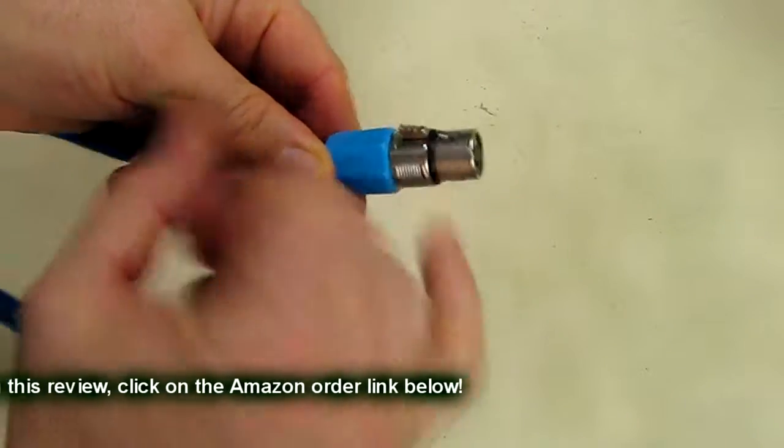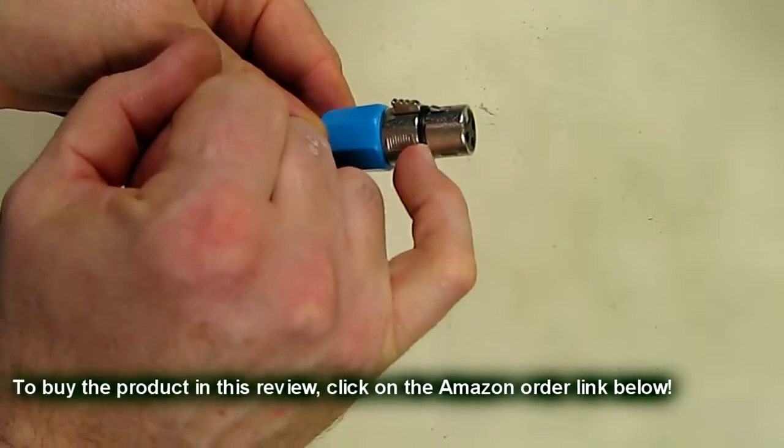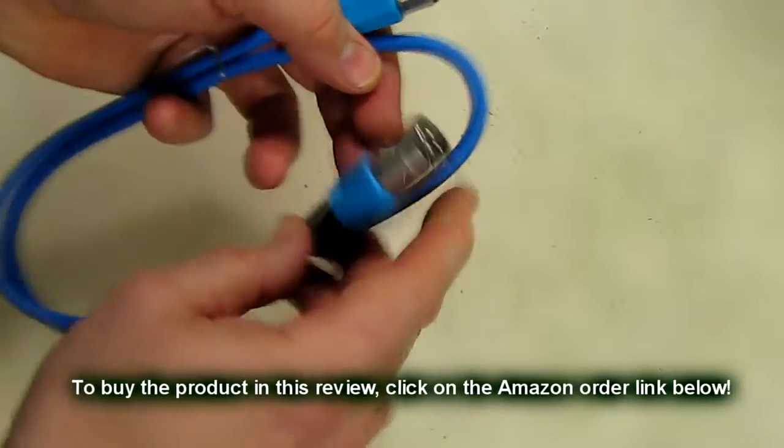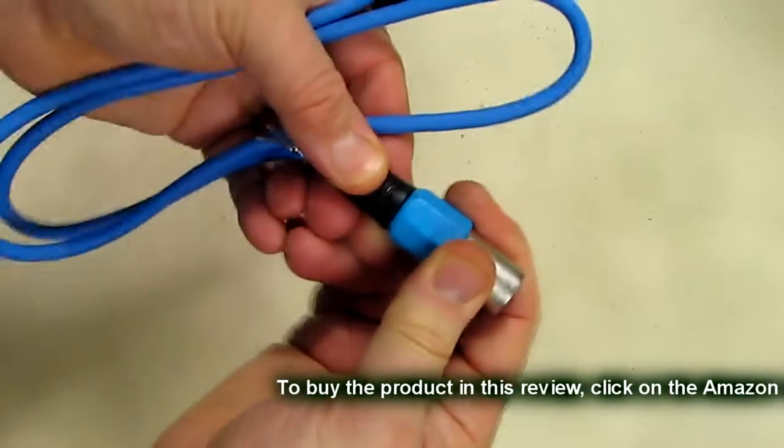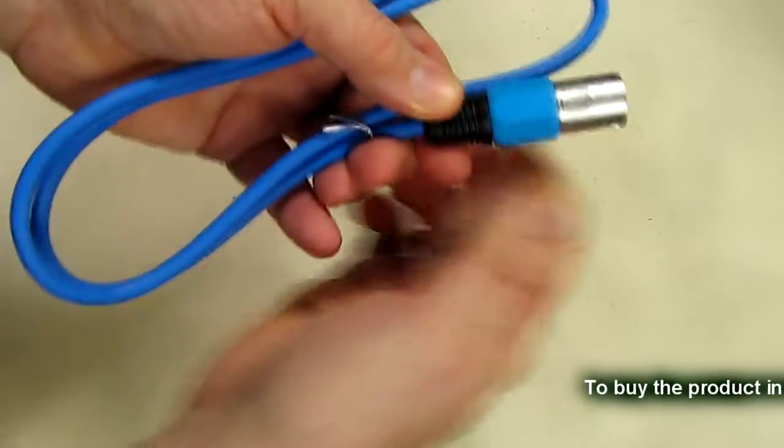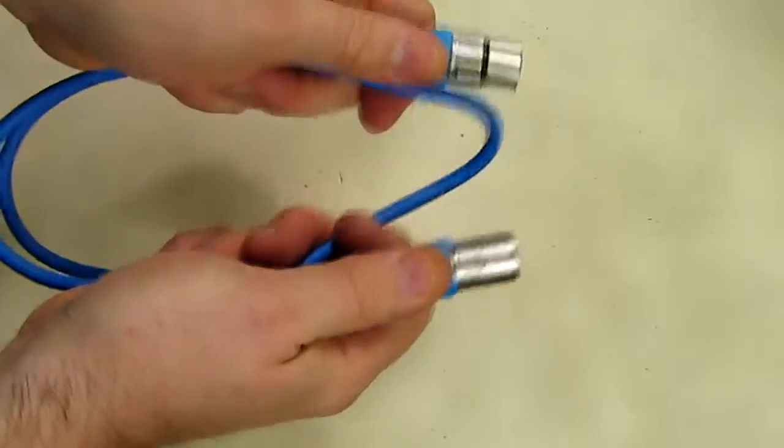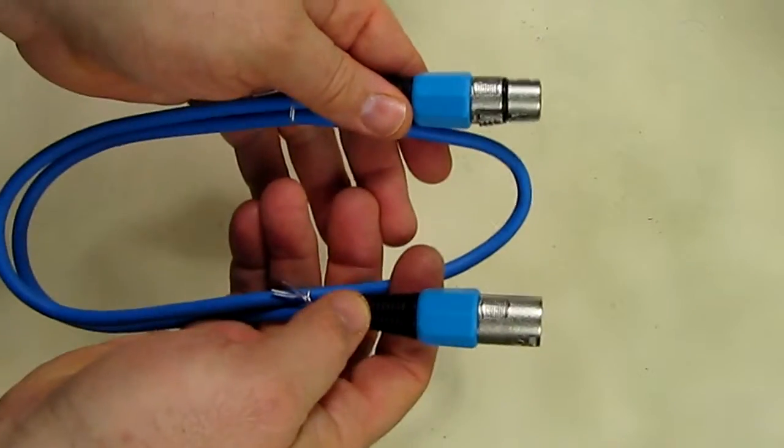See that gasket right there? That gasket provides a nice seal to your microphone and the strain relief on here you can see is flexible and durable, and this is nicely oversized so that you have no trouble gripping it and plugging it into your equipment.